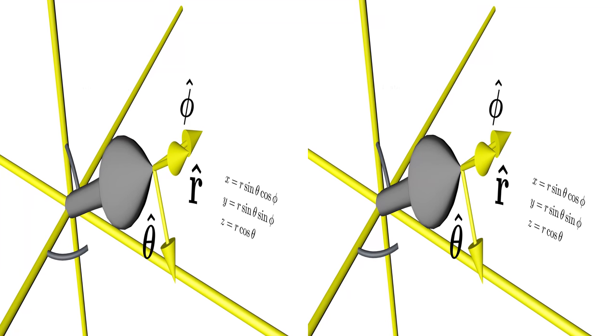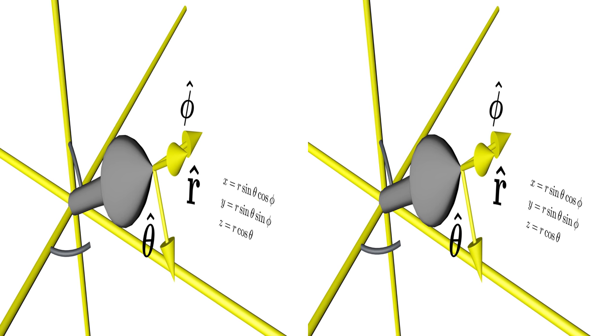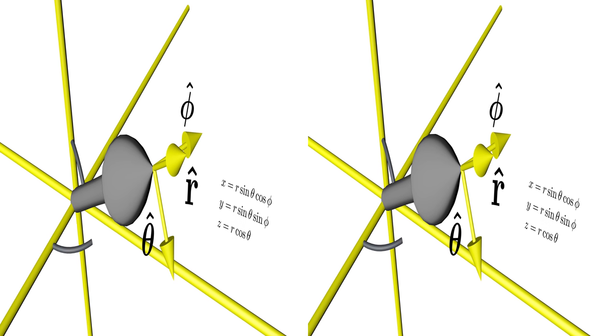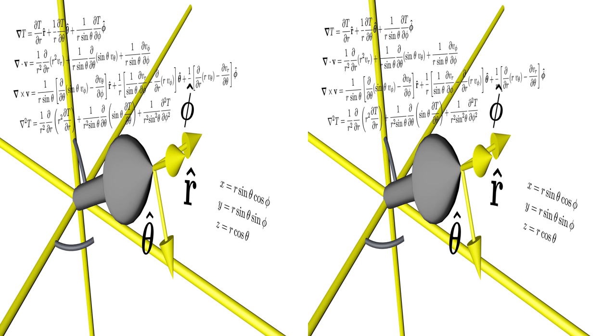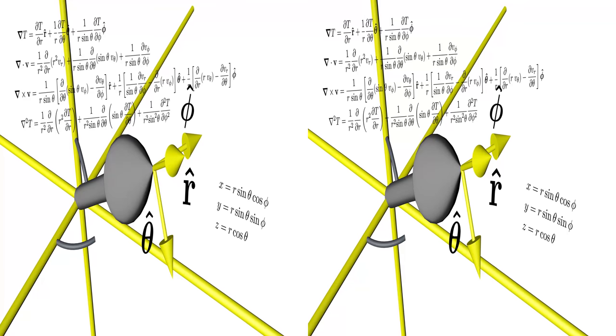Using this definition of the spherical coordinate system, you can write down the relation between the Cartesian and spherical coordinates and find the expressions for different operations in this coordinate system.